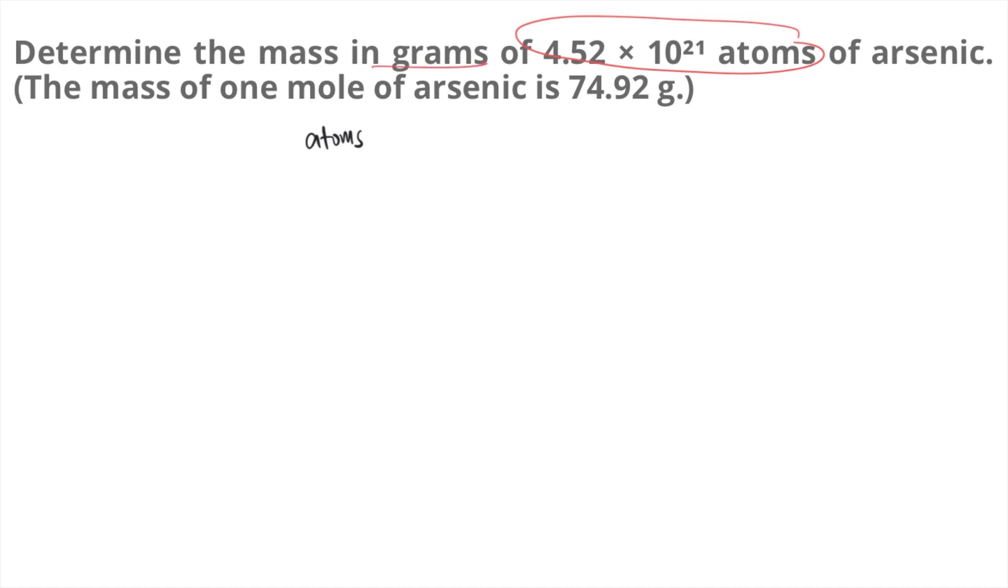We want to convert it into grams because the problem says determine the mass in grams. So how do we convert atoms to grams? This is a two-step problem. First, convert atoms into moles, and after getting the moles, you can convert moles into grams.